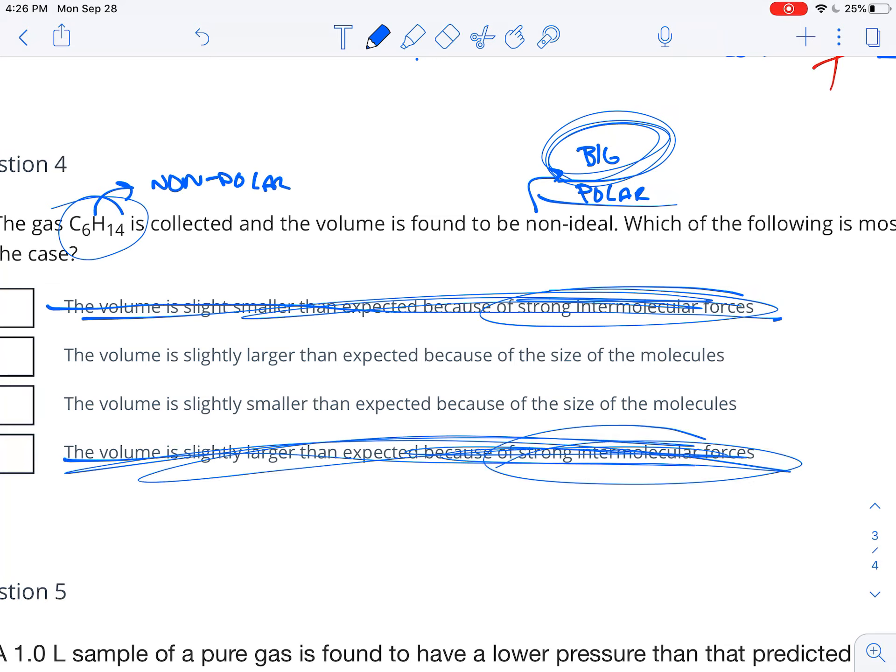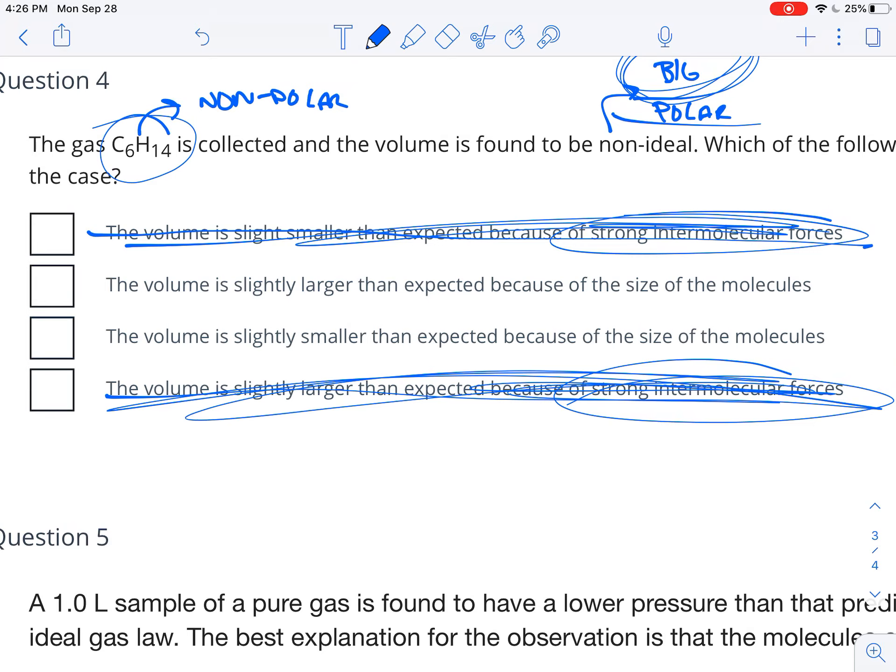What this guy has is size. And if he has size, what that means is that it's going to deviate and you're going to end up with something that's either got higher pressure or higher volume than what you would expect because those particles are actually taking up space.